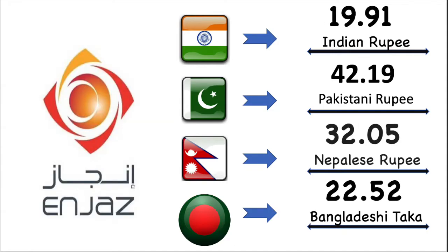Now we are going to talk about India exchange value for each country in details. Indian Rupees market exchange value is 19.82. Pakistan Rupees market exchange value is 42.10 Pakistani Rupee. Nepal Rupees market exchange value is 32.09 Nepalese Rupee. Bangladesh market exchange value is 22.50 Bangladesh Taka.